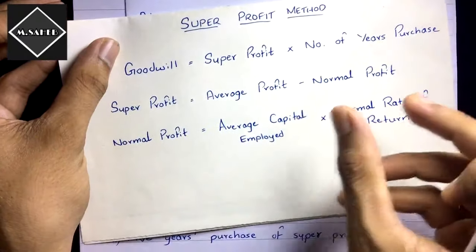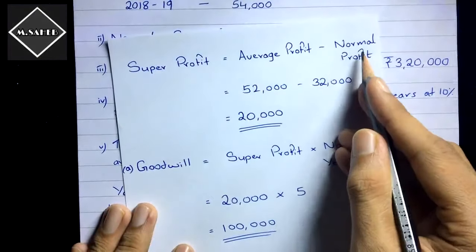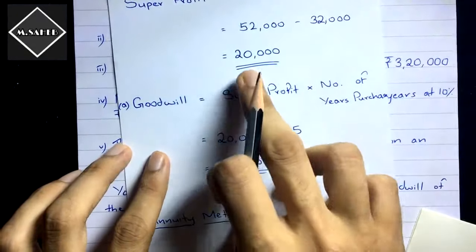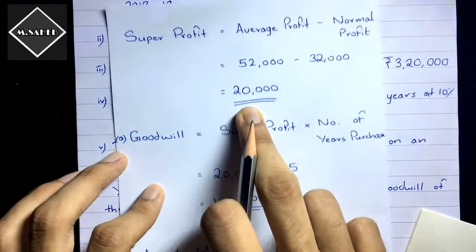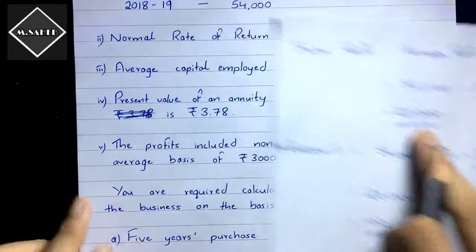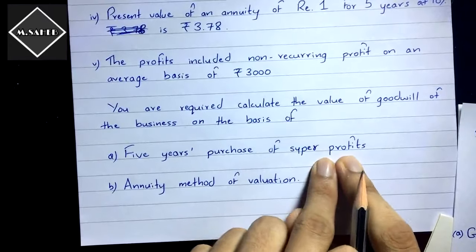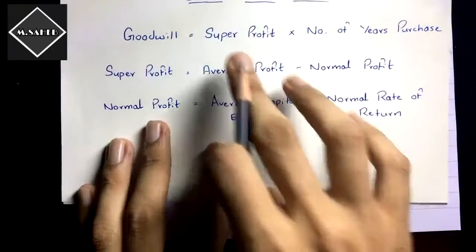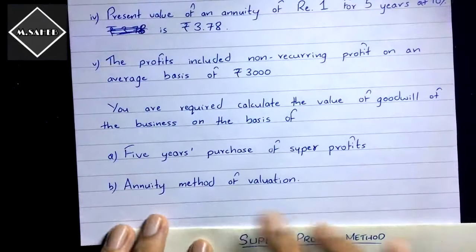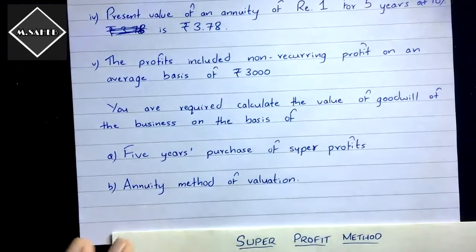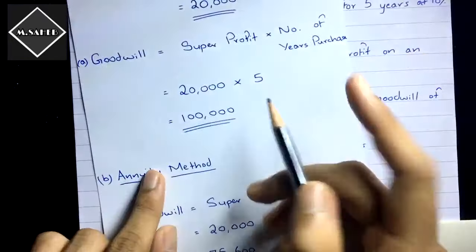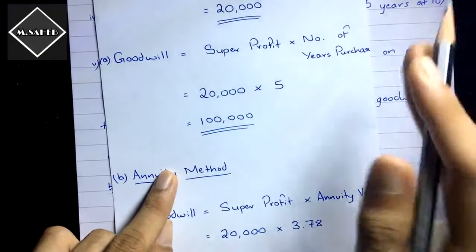Now we calculate super profit: Super Profit = Adjusted Average Profit − Normal Profit = ₹52,000 − ₹32,000 = ₹20,000. For goodwill using the super profit method: Goodwill = Super Profit × Number of Years Purchase = ₹20,000 × 5 = ₹1,00,000.